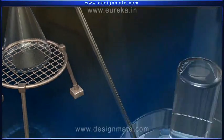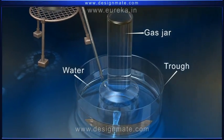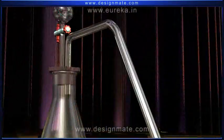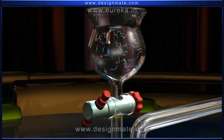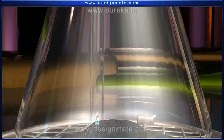The delivery tube leads to an inverted gas jar placed over a trough of water. Now, allow hydrogen peroxide to be added dropwise into manganese dioxide.